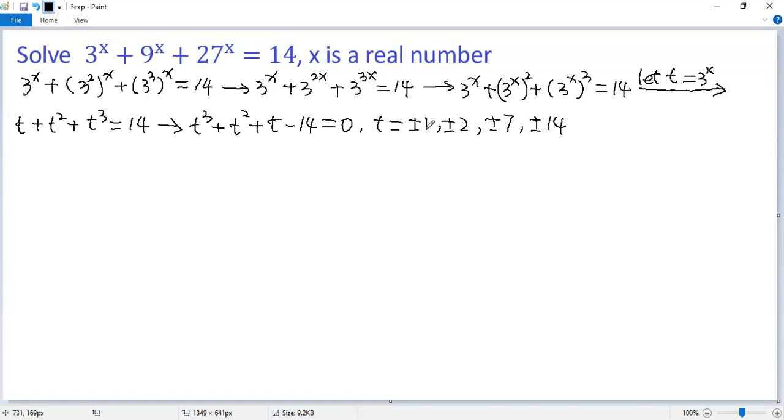t equals plus minus 14 and t equals plus minus 1 are not solutions. Now try t equals 2. Then the left side becomes 2 cubed plus 2 squared plus 2 minus 14, which is 8 plus 4, 12 plus 2, 14 minus 14 is 0. So t equals 2 is a solution.